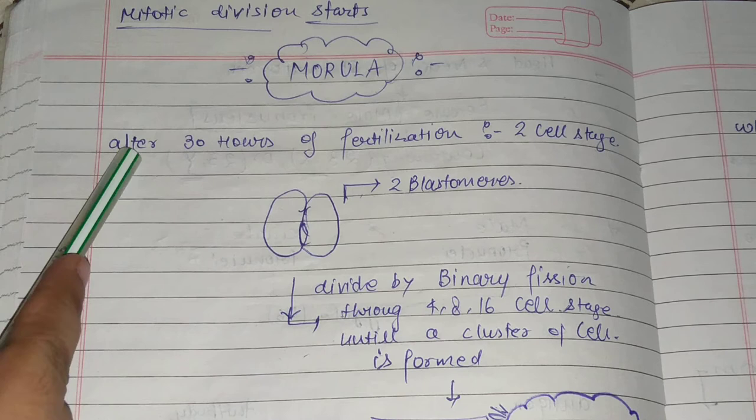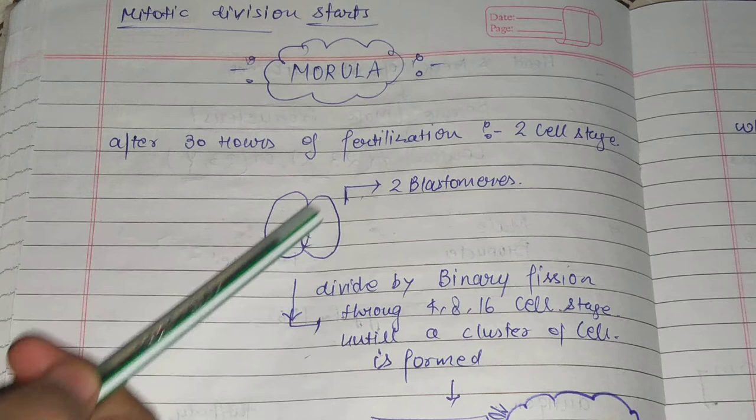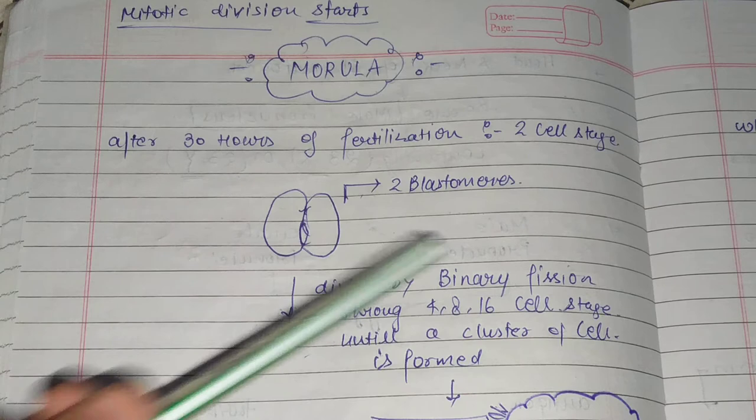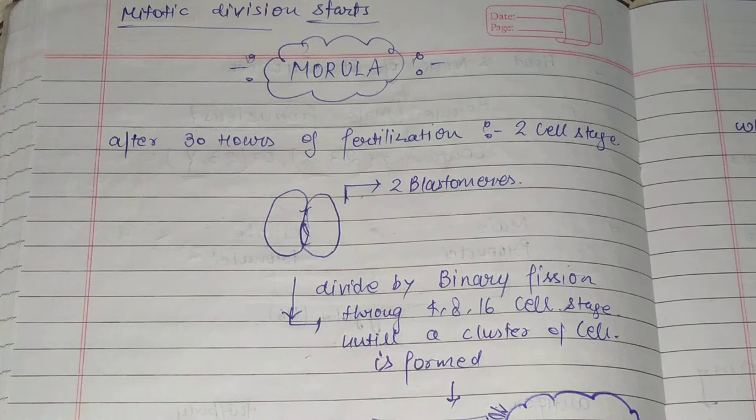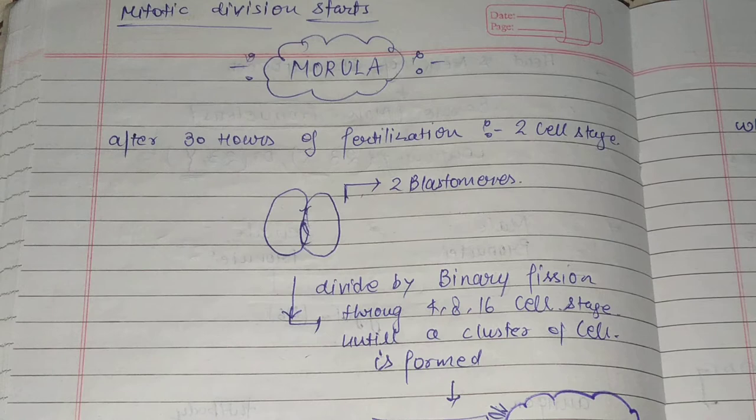After 30 hours of fertilization, the two-cell stage comes. In the two-cell stage, there are two blastomeres. These blastomeres divide by binary fission to the 4, 8, and 16-cell stage, until a cluster of cells is formed.